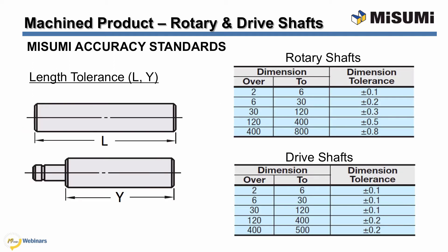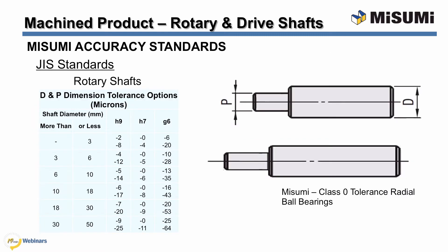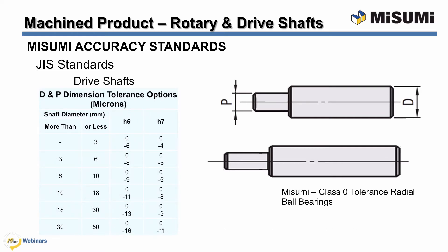The next tolerance specification is the length tolerance, which is typically not as critical for rotary shafts because the shaft ends can protrude through a support hole such as a bearing. The length tolerance for rotary shafts can range from plus or minus 0.1 to 0.8 millimeters. Drive shafts are normally direct mounted or coupled, so the length tolerance may be more critical and has a tolerance of plus or minus 0.1 to 0.2 millimeters depending on the length of the shaft ordered. Misumi rotary shaft diameters follow the JIS shaft fit tolerances. The available tolerance specs are H9, H7, and G6. Drive shafts also follow the JIS standard and are available in H6 and H7 tolerances.